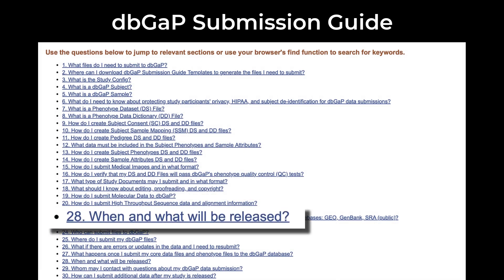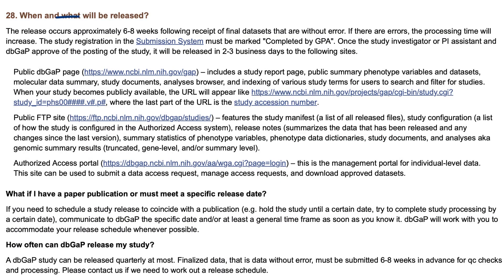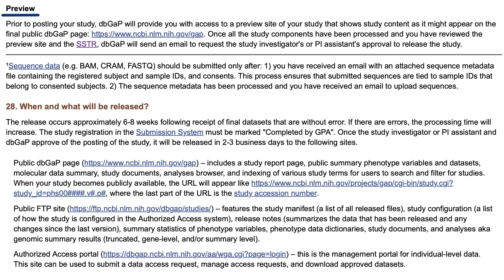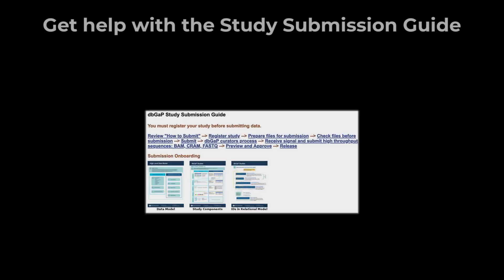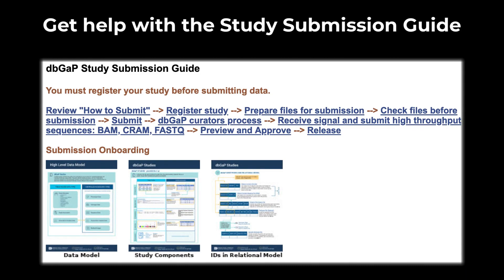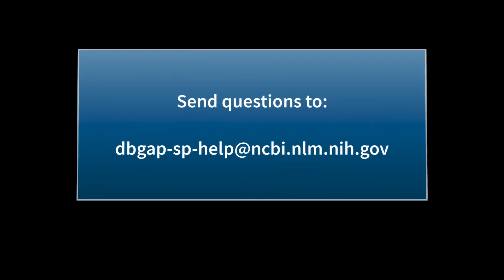Number 28 in the submission guide talks about study release. Typically, study processing is completed six to eight weeks following receipt of final error-free datasets. After all expected data components have been submitted and processed, dbGaP will send an email to review the preview site and the subject sample telemetry report, or SSTR. We will also request approval from the PI or PI assistant to release the study. The study is released two to three business days after we receive the approval. That's all for part three. Be sure to refer to the dbGaP submission guide, and you can send questions to dbGaP-SP-help at ncbi.nlm.nih.gov.